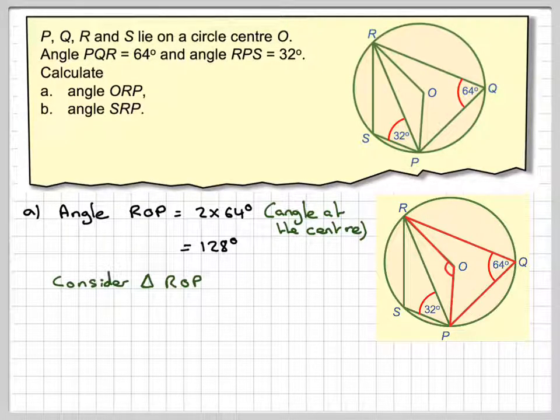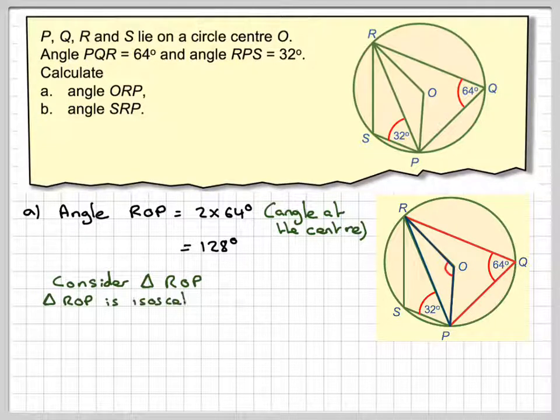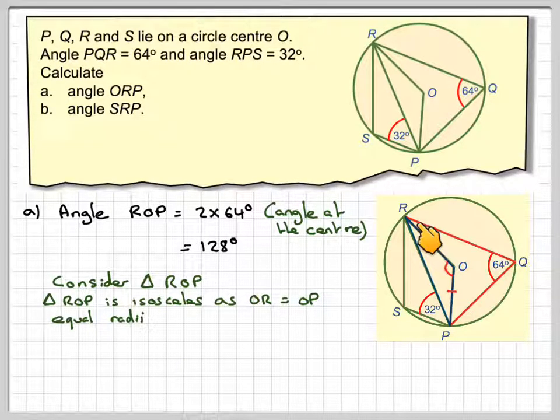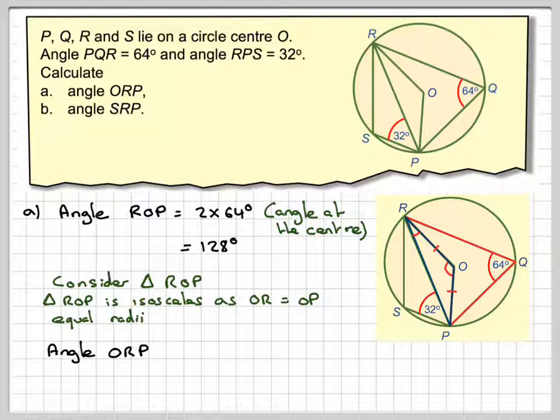Well, if you consider triangle ROP, and I'll just draw that in blue, then ROP is isosceles because this length here and this length here are equal radii. We know that this angle and this angle are the same because it's an isosceles triangle.